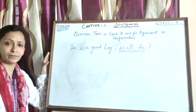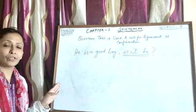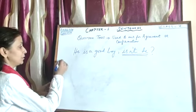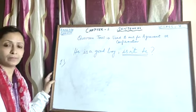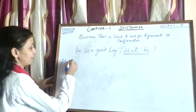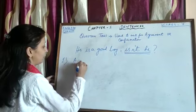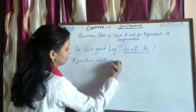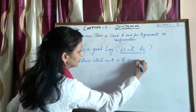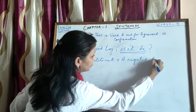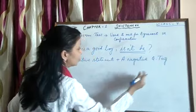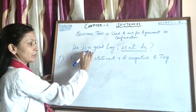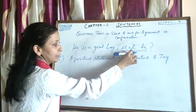Now, we have many rules for deciding what kind of tags we will use in different kinds of statements. So let's begin with the rules. The first and foremost rule for deciding on question tags is: a positive statement will always have a negative tag. You must remember — and it is easy to remember — because it is always opposite. This example given here is the same kind: this is a positive statement, the tag is negative.